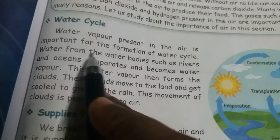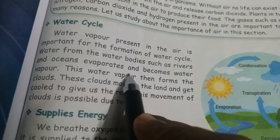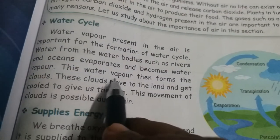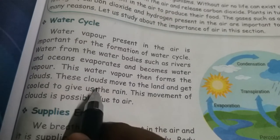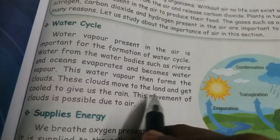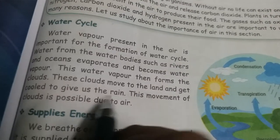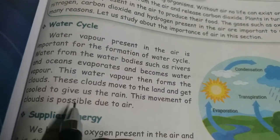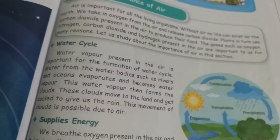Water from water bodies such as rivers and oceans evaporates and becomes water vapor. This water vapor forms clouds. These clouds move to the land and cool down to give us rain. This movement of clouds is possible due to air.